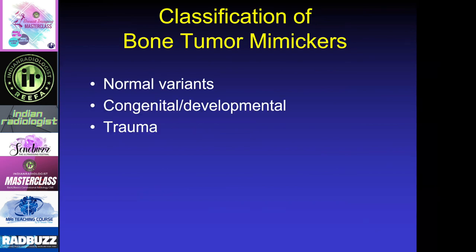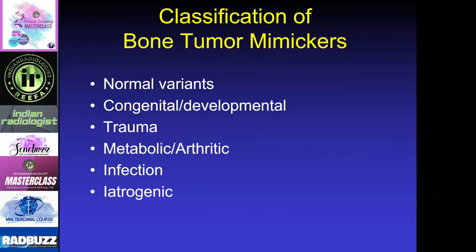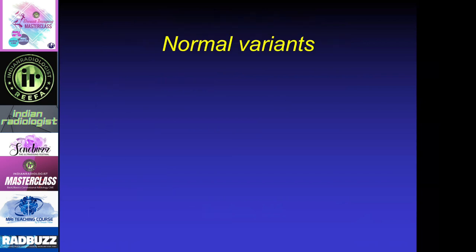Bone tumor mimickers can be classified within these different categories: normal variants, congenital developmental processes, traumatic disorders, metabolic and arthritic, infection, iatrogenic, and technical artifacts. We're going to go through these categories so that you can see the variety of lesions that can mimic bone tumors.